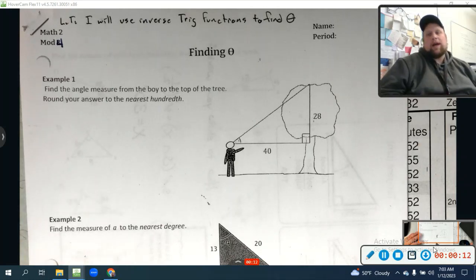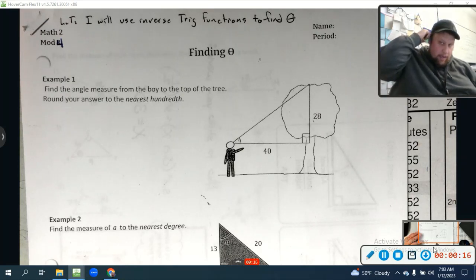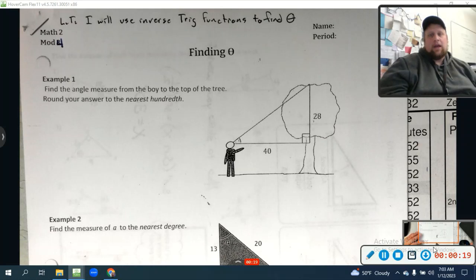So up until this point, guys, we've given you an angle, and we've had you decide what other information we give you so that we could find a missing side length using sine, cosine, and tangent.